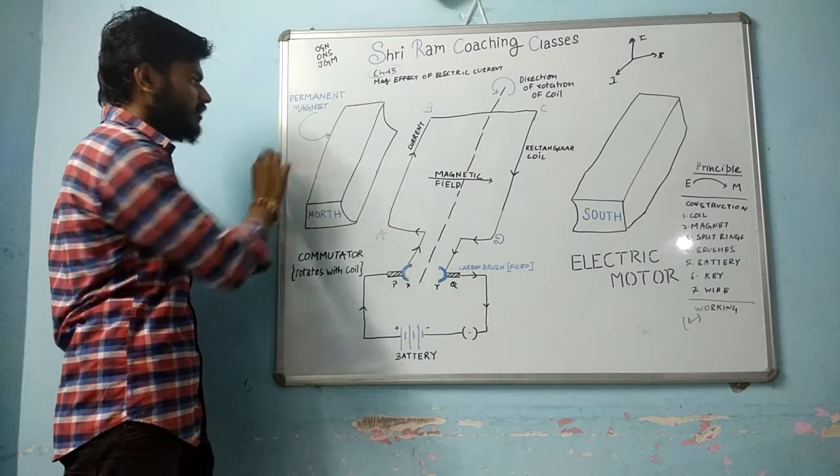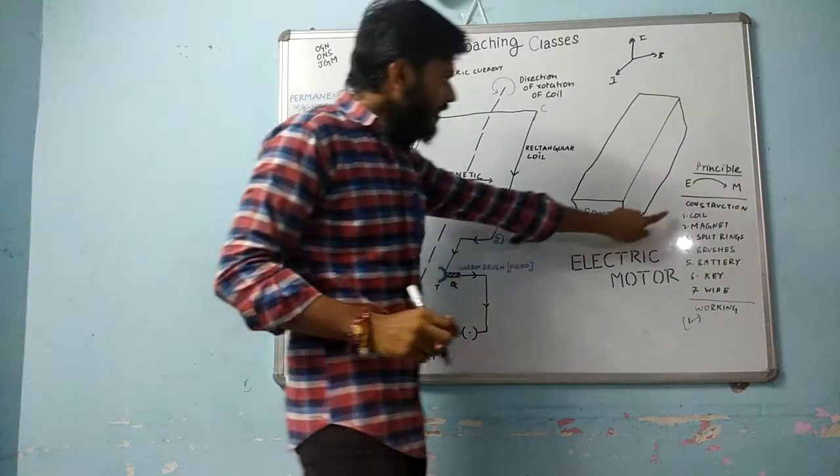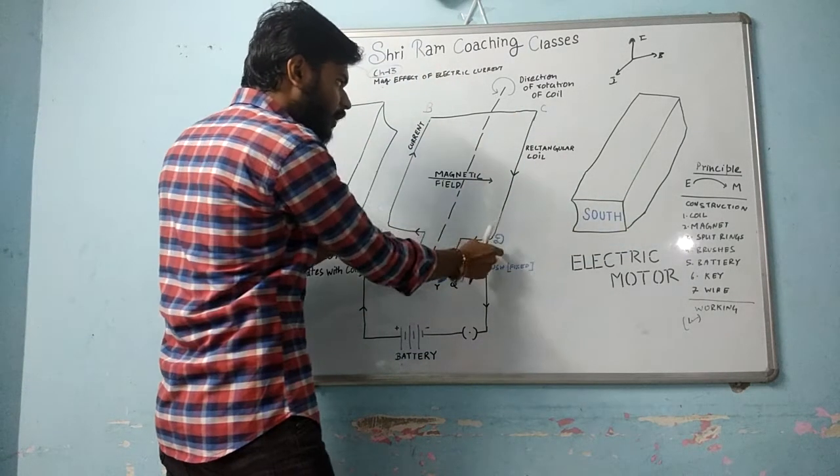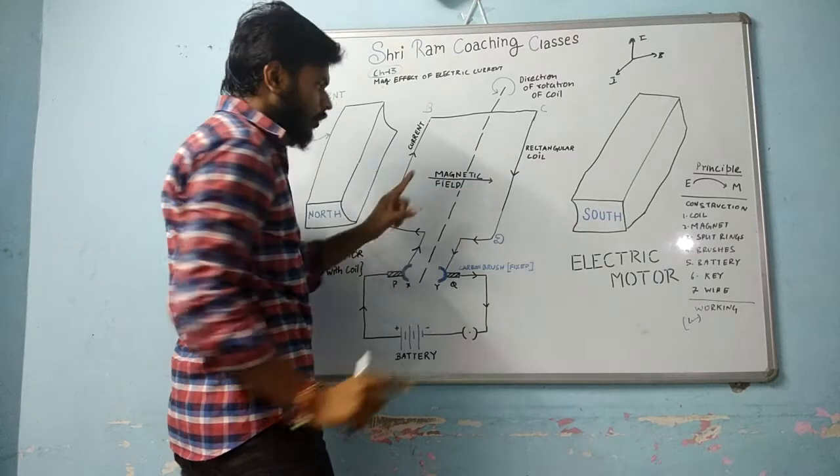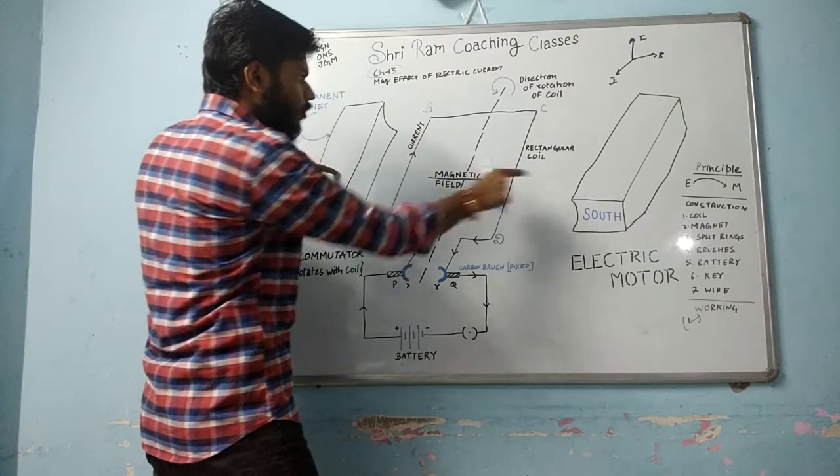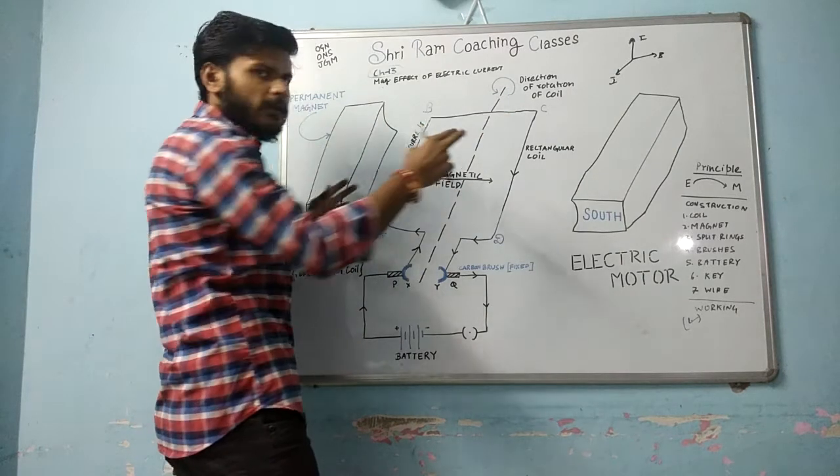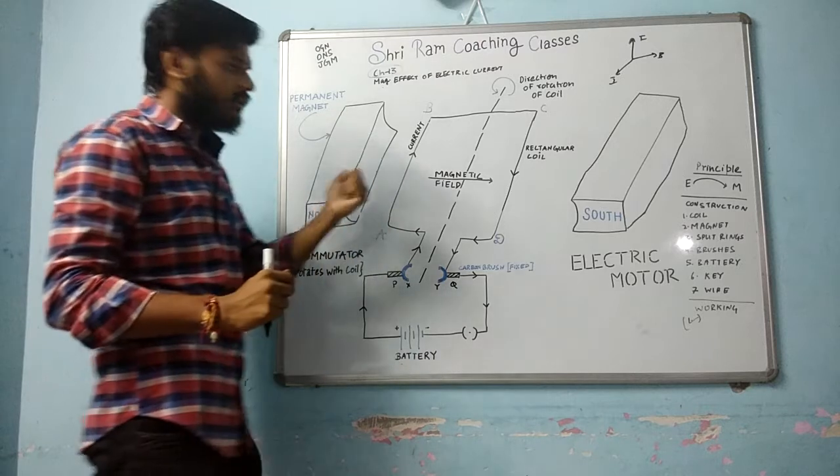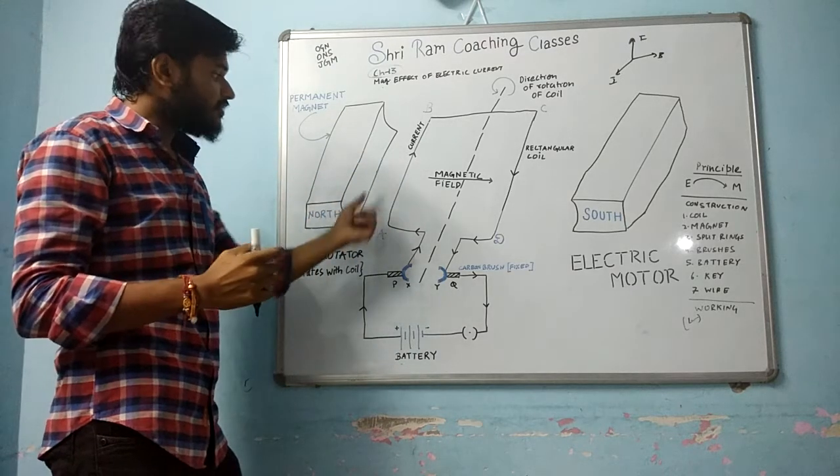The construction: what do we need to do? The first thing is a coil, this is ABCD coil. This is a magnet, a permanent magnet. This is north pole and this is south pole. This is a horseshoe magnet or bar magnet, a powerful magnet. The magnitude of the magnet determines the motor speed.